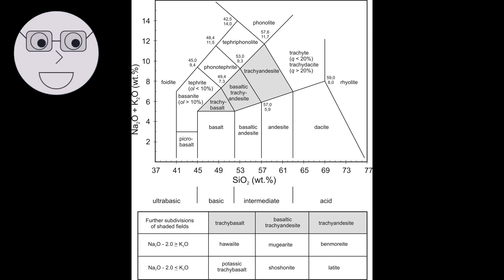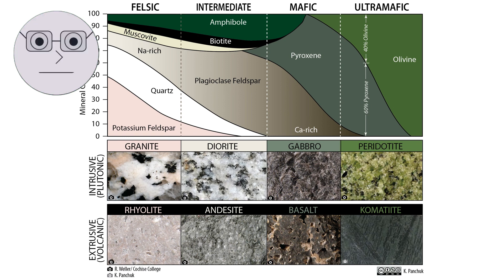The chemical composition of igneous rocks can also be used to determine their classification. For example, rocks with high levels of silica are classified as felsic or acidic, while rocks with low levels of silica are classified as mafic or basic. Understanding the chemistry of igneous rocks can provide valuable insights into the geological history of an area, as well as the potential for mineral resources.